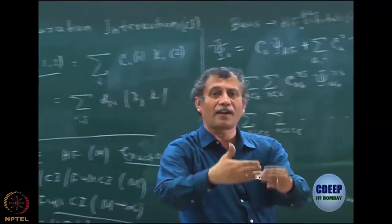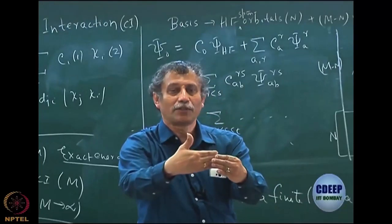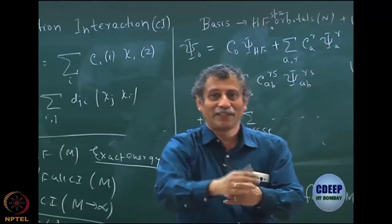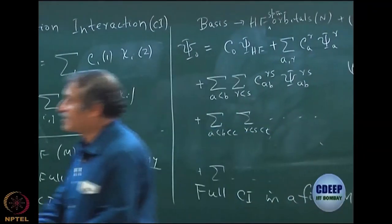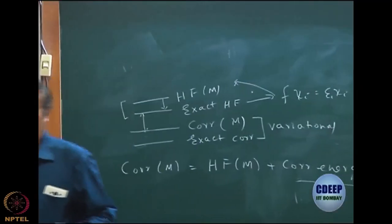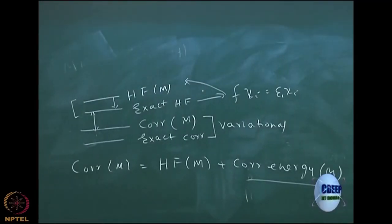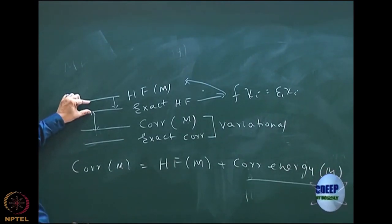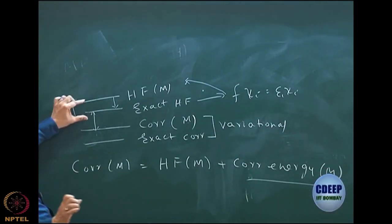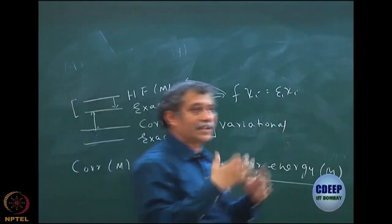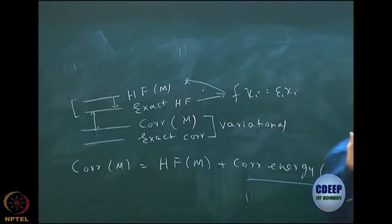The nature of the basis also matters — for example, STO-3G would be a poor basis, described by only three Gaussians, which is not sufficient. For example, beyond a point Hartree-Fock does not change much, so the real change comes from adding MP2. If m is sufficiently large, the delta between m-basis Hartree-Fock and exact Hartree-Fock is very, very small, whereas the correlation energy contribution is large. So it will usually go down below exact Hartree-Fock.